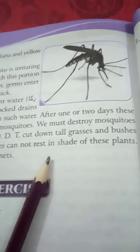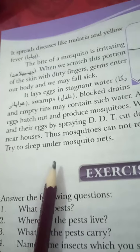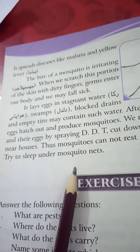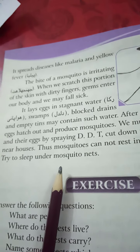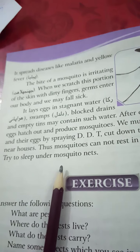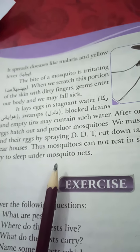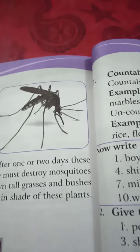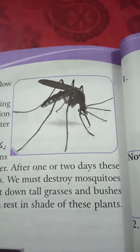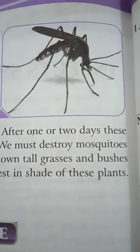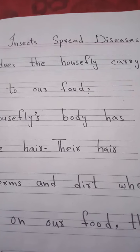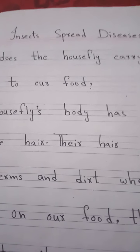We must destroy mosquitoes and their eggs by spraying DDT. We should also cut down tall grasses and bushes near houses, so that mosquitoes cannot rest in the shade of these plants. (گھر کے قریب لمبی گھاسیں اور جھاڑیاں کاٹ دینی چاہئیں تاکہ مچھر وہاں انڈے نہ دے سکیں۔)